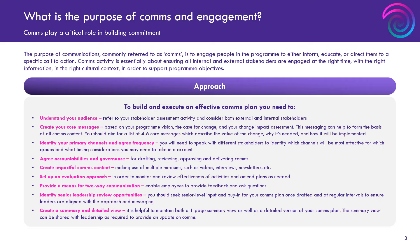It's also good to spend some time thinking about accountability and governance. Communications tend to be one of those things that get held up with senior stakeholders wanting to review and change words, and everyone wants to have a go at the draft. Really agree that governance up front. Don't let that become a delay because ten people want to read every email that goes out. Agree who gets to sign off, agree what type of communications key senior leaders need to see, and try to limit the governance so that you can drive accountability and ownership through the communications team and get going on sending your comms out.